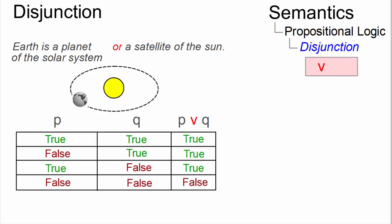Only if both propositions are false, that is, Earth is not a planet or not a satellite of the Sun, P or Q is false.